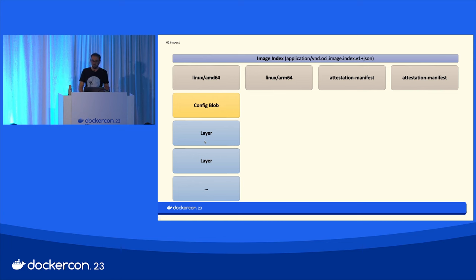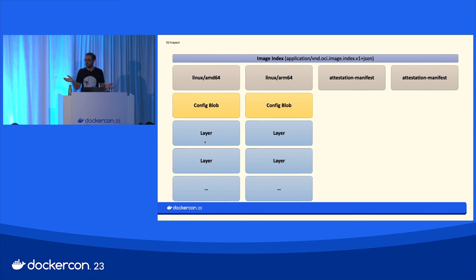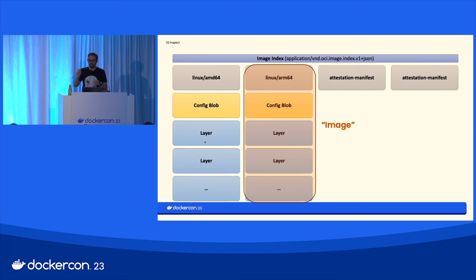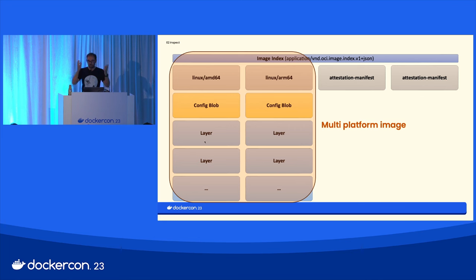If you look at the ARM64 manifest, we have exactly the same thing. Most of the time, this is what people call an 'image' — the runnable asset. Combining one or multiple platform images with the index gives us what we call a multi-platform image. It's just one step on top of that.